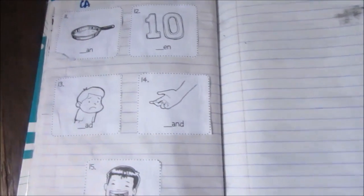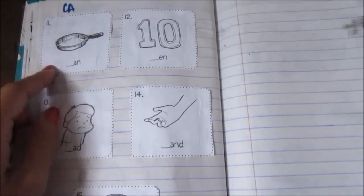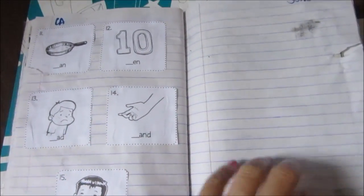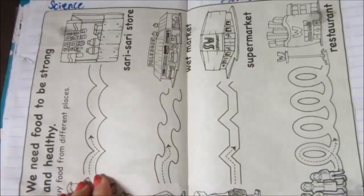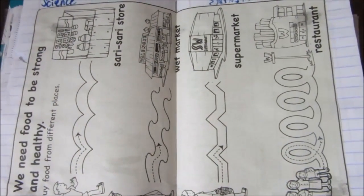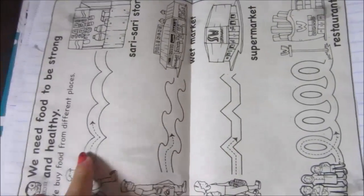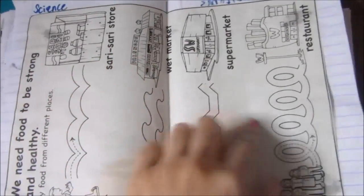And then for CA, he is going to paste the starting letter for each sight word. And for science, we will learn where we buy food. And then he will just trace this.